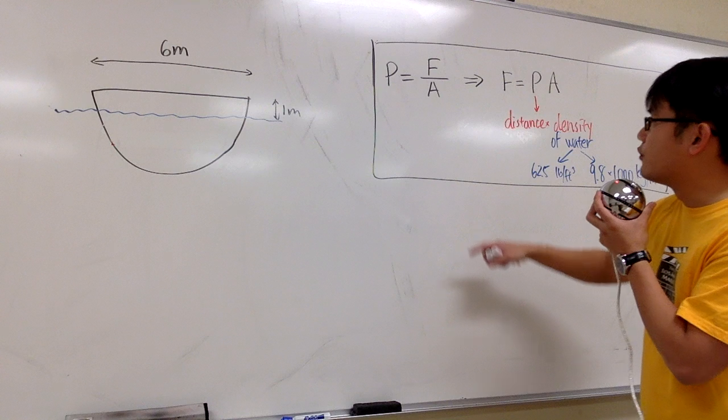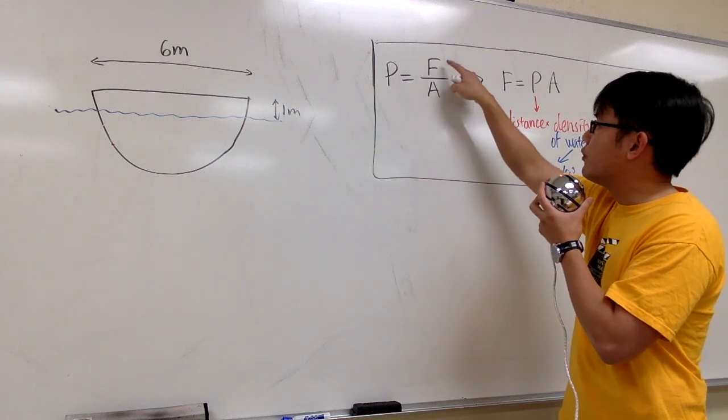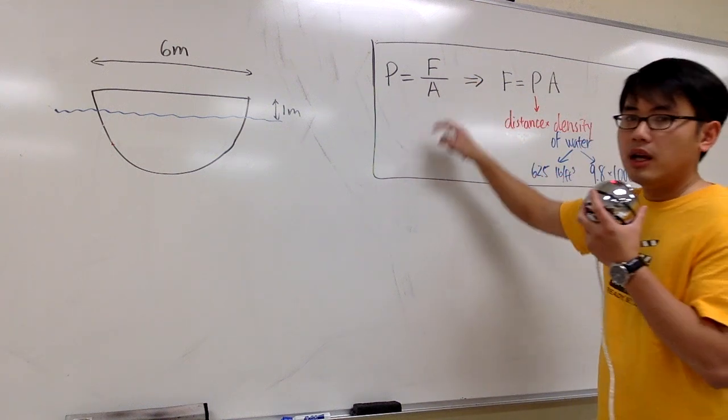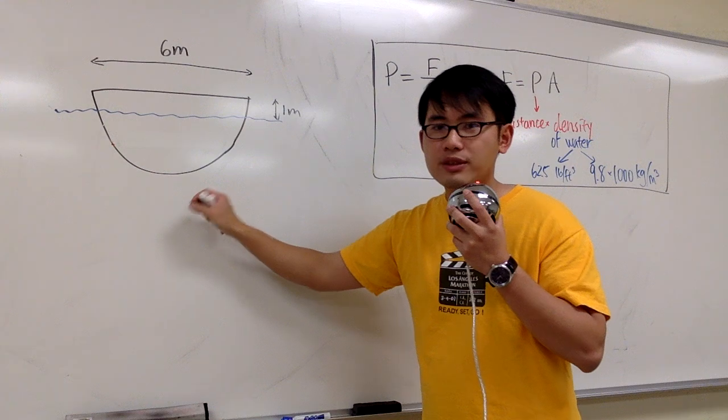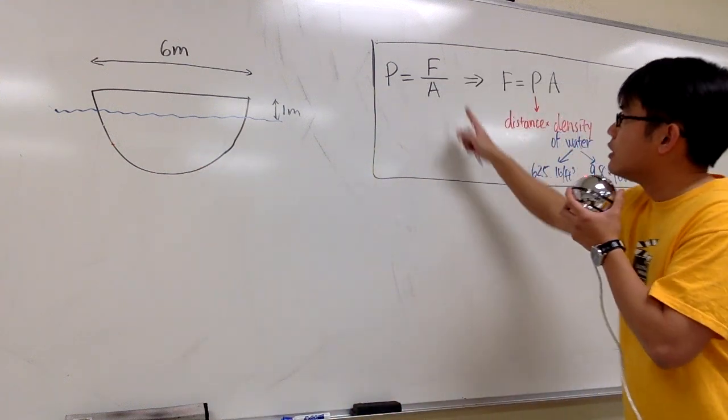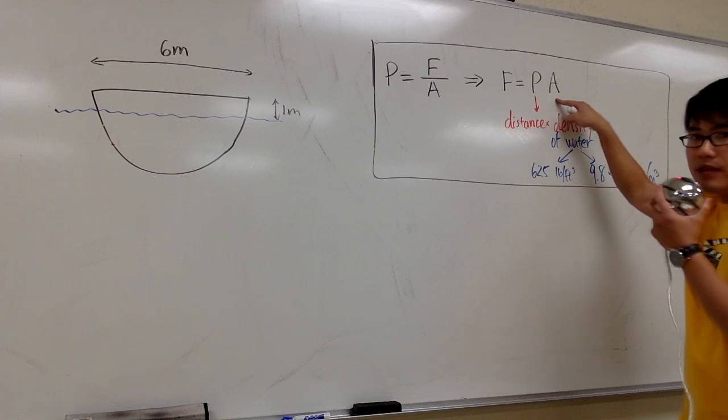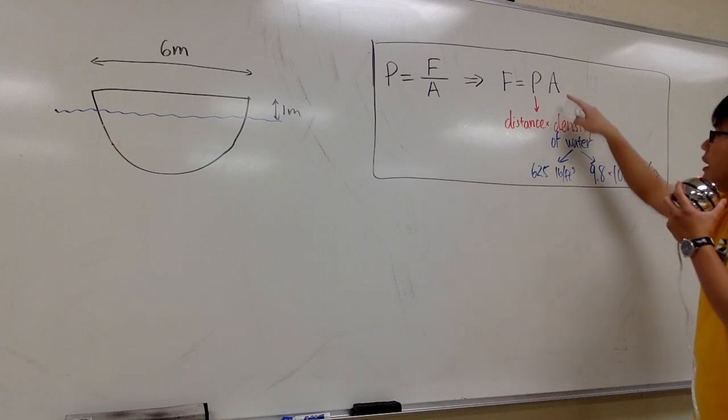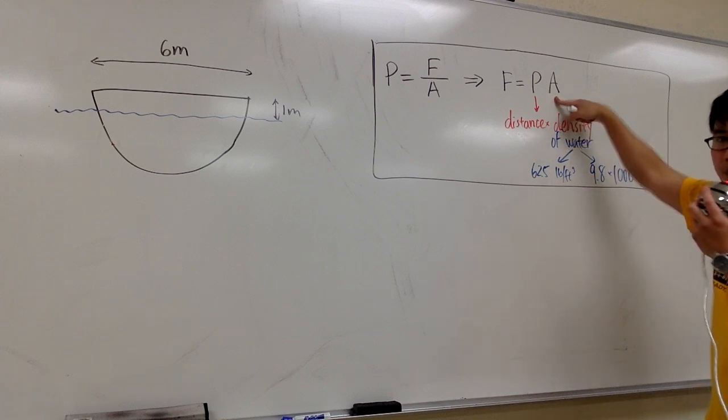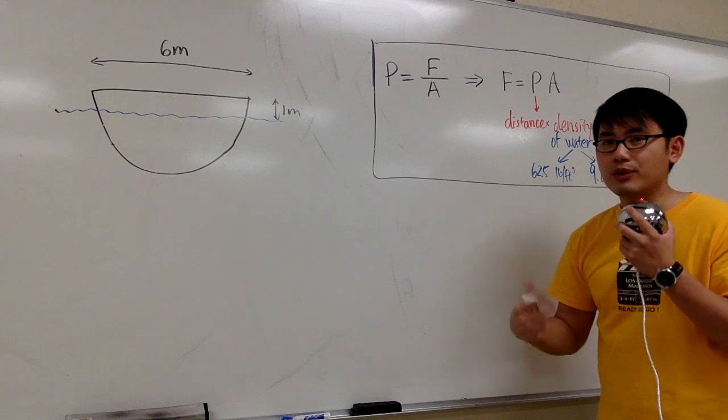The connection between pressure and force is this: Pressure is equal to force divided by area. The question is asking us for the hydrostatic force. Therefore, we are going to look at this equation as force is equal to pressure times area. The area is usually the harder part because that's the part where we have to do the labeling, do the math for it.